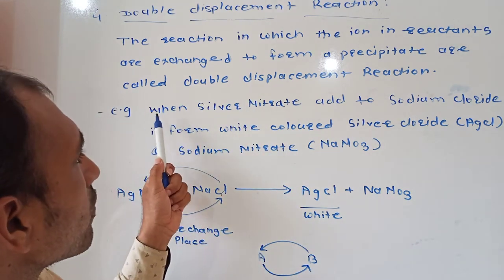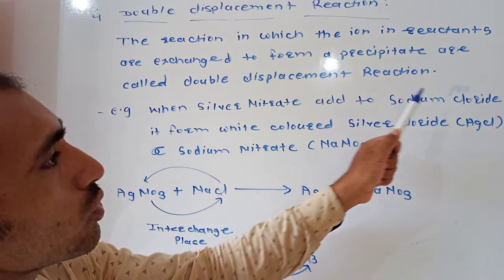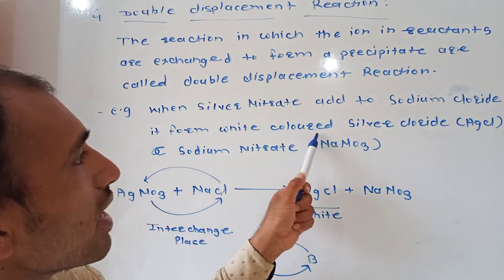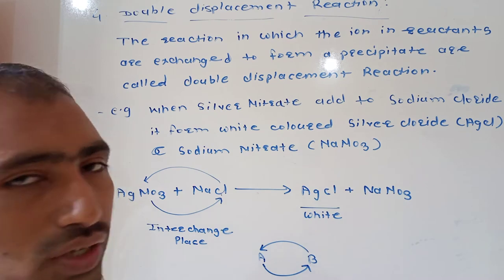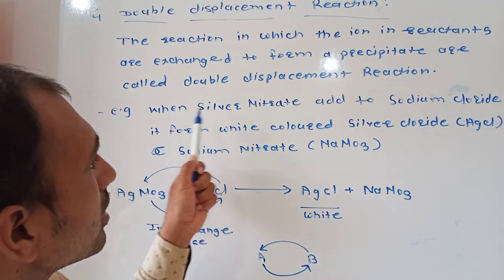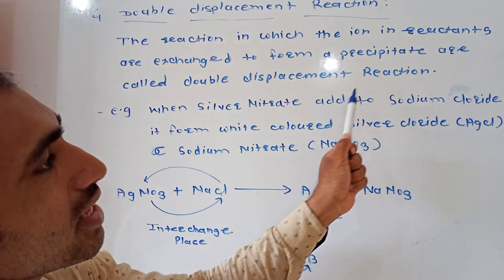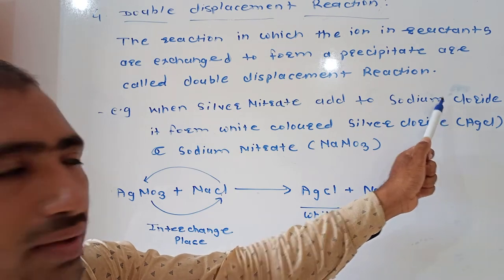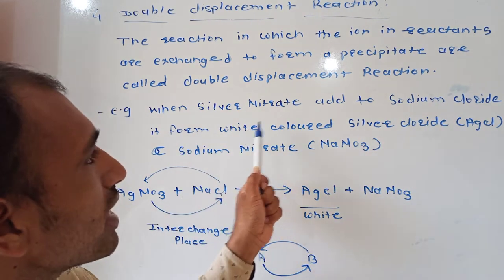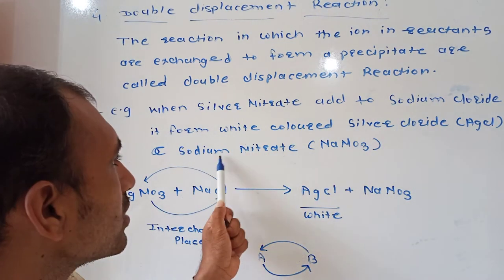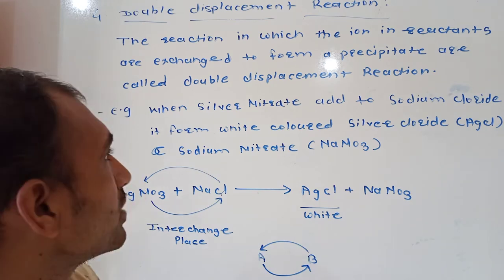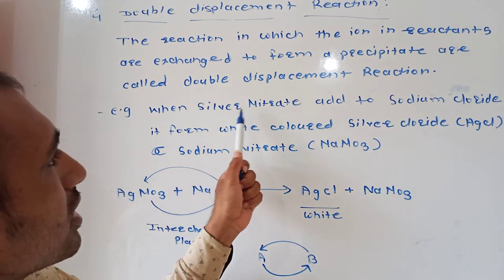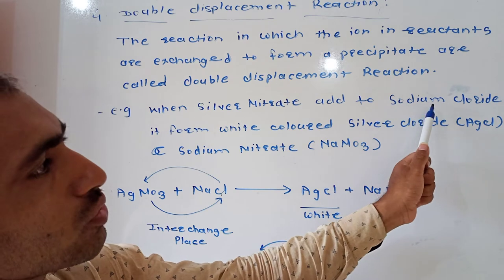Let's see its example. When silver nitrate is added to sodium chloride, it forms white color silver chloride and sodium nitrate.